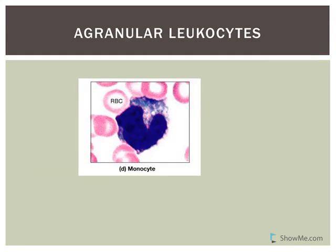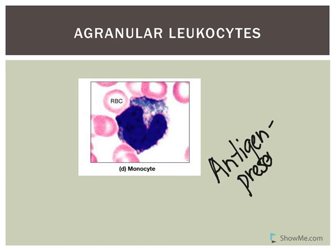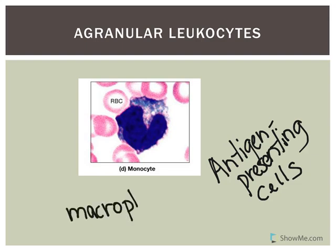The agranulocytes include monocytes and lymphocytes. Monocytes are very large and are very important phagocytes, and they're extremely important as antigen-presenting cells — presenting possible antigens to components of our specific defense system. Monocytes that leave the bloodstream and enter tissues are referred to as macrophage. They will be elevated under certain conditions such as typhoid fever, malaria, and mono.